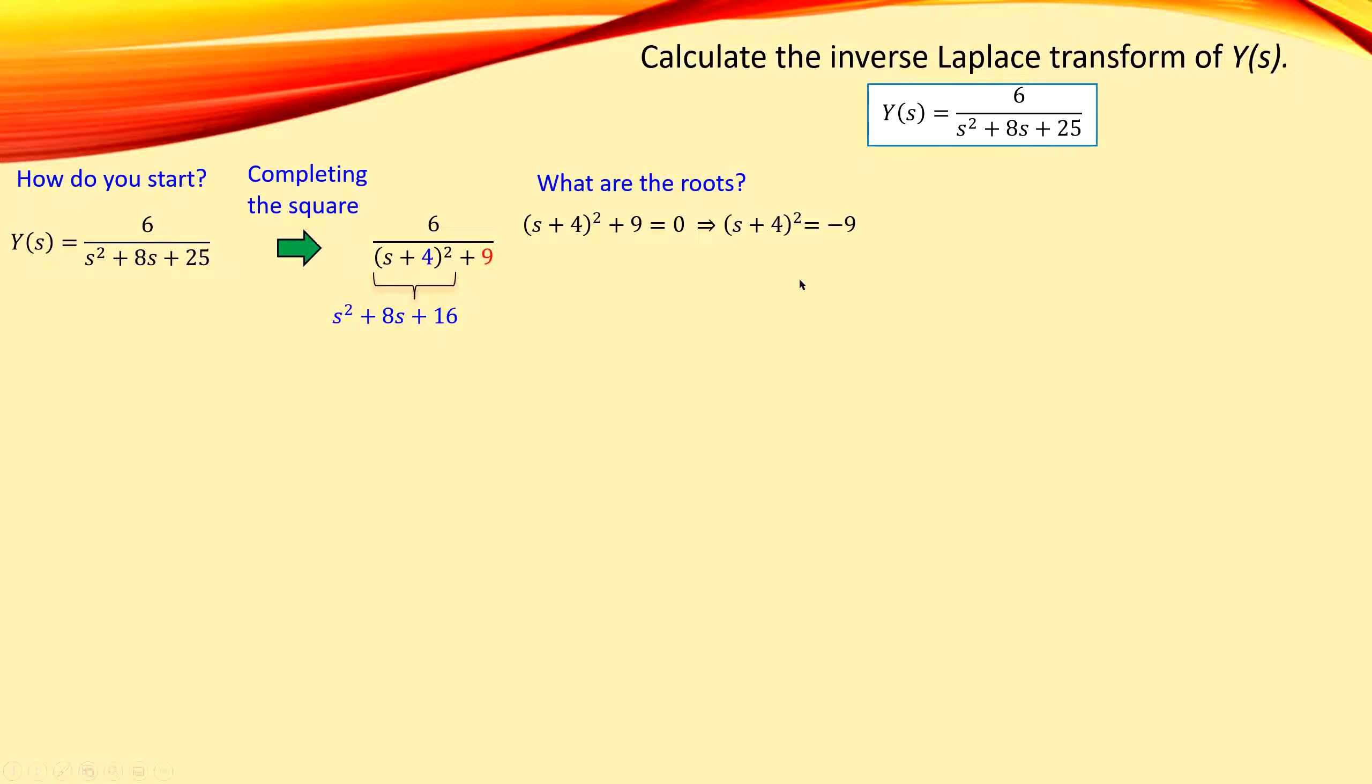But square root of the minus 9 doesn't really give you a real value. So you will have now an imaginary value. You will get minus and a plus j of 3. So that will be the square root of 9 will give you 3.